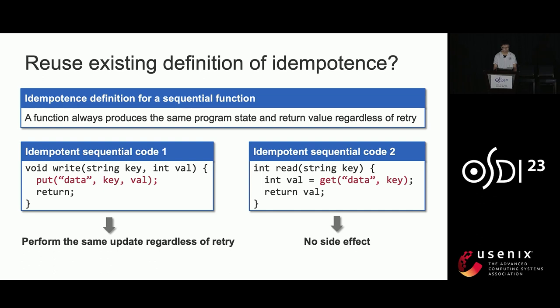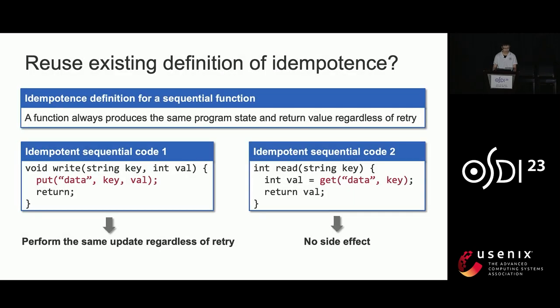First, I will introduce how to formally define idempotence. There has been a definition of idempotence for sequential functions, which requires that a function always produces the same program state and return value regardless of retry. For example, consider two sequential idempotent functions: 'write', which updates the value indexed by a key, and 'read', which returns the value indexed by a key. 'Write' is idempotent because it always performs the same update regardless of retry, and 'read' is idempotent because it has no side effect. However, when these two functions run concurrently, idempotence will be corrupted.